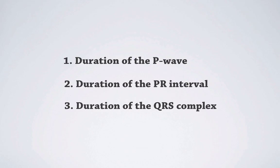As we have learned in the previous sessions, several diagnoses can already be made just by performing simple measurements on the time or x-axis. In order to understand if the duration of certain parts of the ECG are off, we need to look at the normal values first. In this session, we're going to talk about the duration of the P wave, the duration of the PR interval, and the duration of the QRS complex.